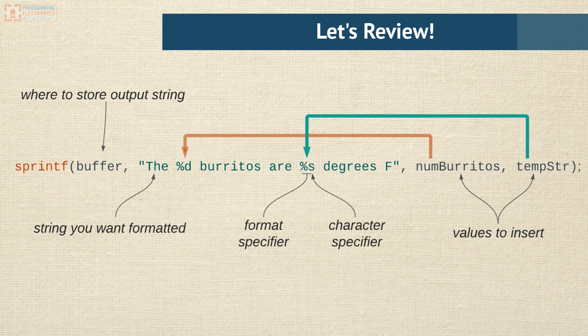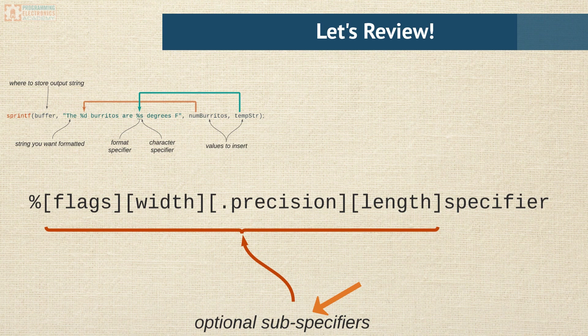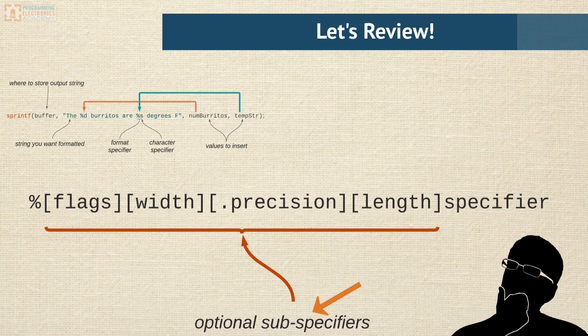Now believe it or not, there's actually a ton more stuff that you can do with sprintf. In fact, between the percent sign and the character specifier, you can insert what are called sub specifiers. And these things will do everything from left justify the inserted values to add leading zeros and more. It's actually pretty cool. Let us know in the comments if you're interested in a follow-on lesson using more of these optional sprintf sub specifiers and we'll see what we can do.